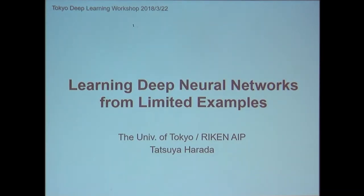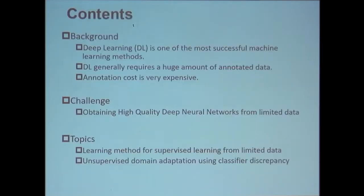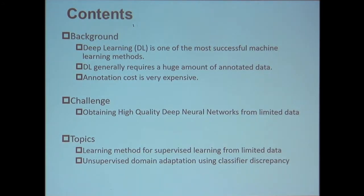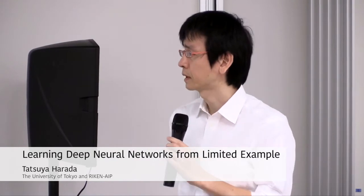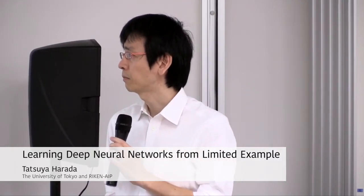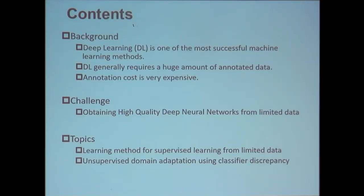The title of my talk is Learning Deep Neural Networks from Limited Examples. As we already know, deep learning is one of the most successful machine learning methods. However, deep learning in general requires a huge amount of annotated data, and the annotation cost is very expensive. So many researchers are now attacking this problem, and our team is also working to obtain high quality deep neural networks from limited data. In this talk, I will introduce some recent developments on this topic.